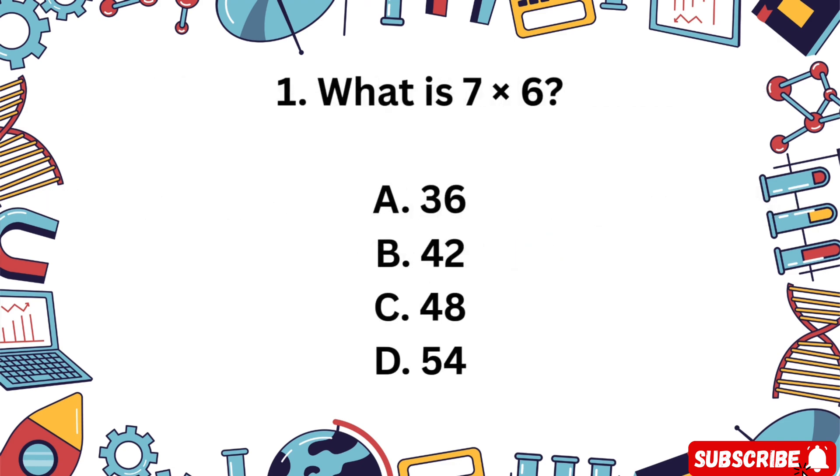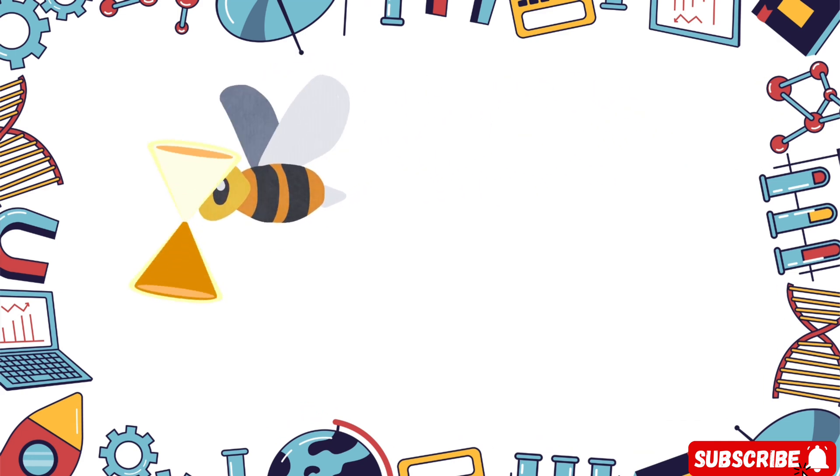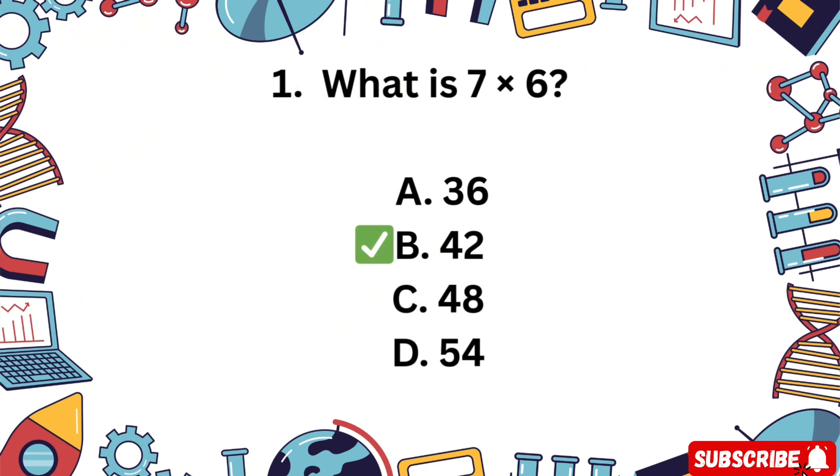Question 1. What is 7 times 6? A 36, B 42, C 48, D 54. You have 5 seconds. The correct answer is B 42, because 7 multiplied by 6 equals 42.